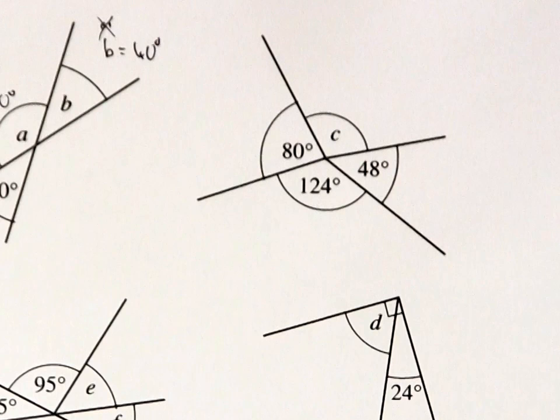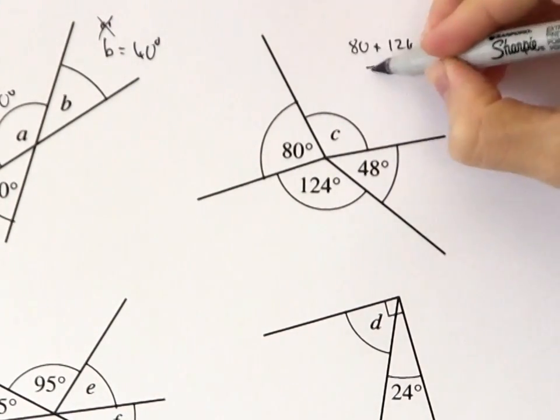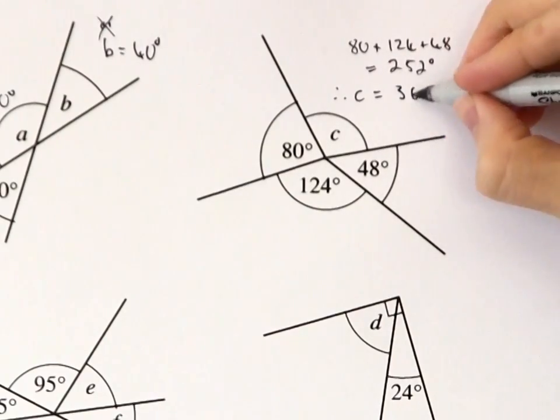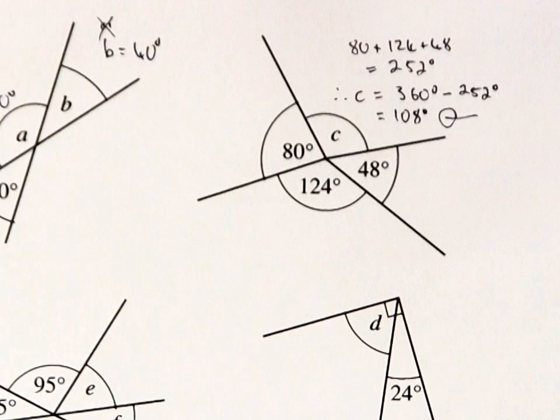All of these angles are at a point, so they all add up to 360 degrees. These three add to 252, so C must be 108 degrees. Just subtract 252 from 360.